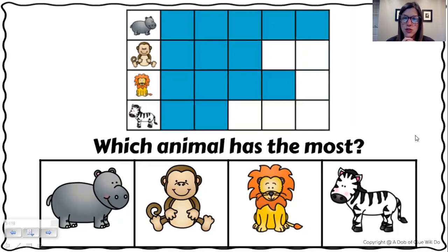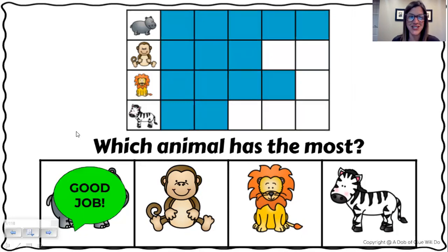Now the lion comes close with one, two, three, four bars. But what's bigger, five or four? Yeah, five is bigger. So the hippopotamus has the most. Good job.